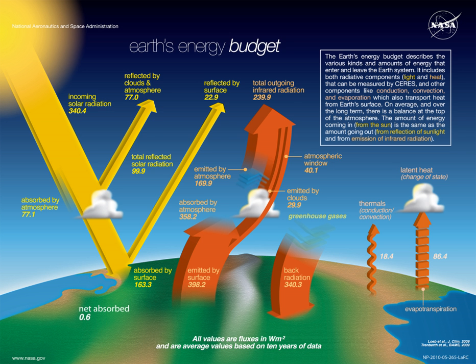The geothermal heat flux from Earth's interior is estimated to be 47 TWh and split approximately equally between radiogenic heat and heat left over from Earth's formation. This comes to 0.087 W per square meter, which represents only 0.027% of Earth's total energy budget at the surface, dominated by 173,000 TWh of incoming solar radiation. Human production of energy is even lower, at an estimated 18 TWh. Photosynthesis has a larger effect — photosynthetic efficiency turns up to 2% of the sunlight striking plants into biomass, with 100 to 140 TWh, or around 0.08% of the initial energy, captured by photosynthesis.